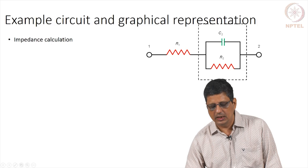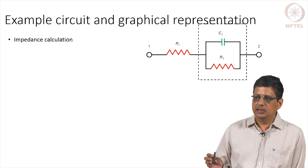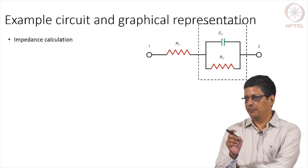A little more complex is this system where you have one resistor in series with another box. That box contains one capacitor in parallel with a resistor. I am taking up this circuit because this can be used to model a very simple electrochemical reaction under certain assumptions.